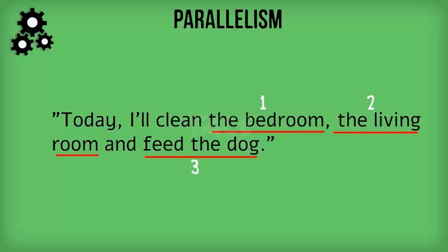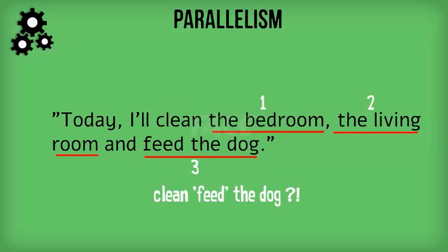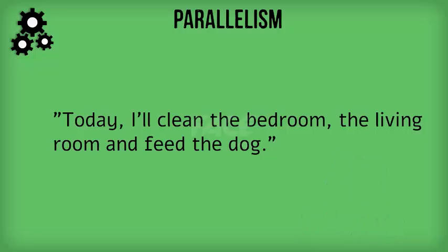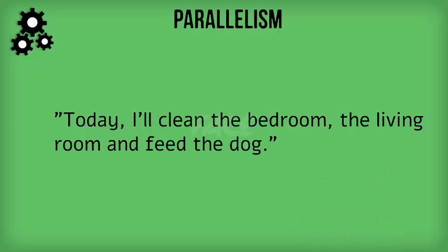In this sentence, all three items — the bedroom, the living room and feed the dog — act as objects of the verb 'clean.' Clean the bedroom, clean the living room and clean feed the dog — does that make sense? Unless the dog's name is 'feed' and it requires grooming, this doesn't work. So, how can we correct this? Break down the sentence and make sure that the elements work individually before combining them.